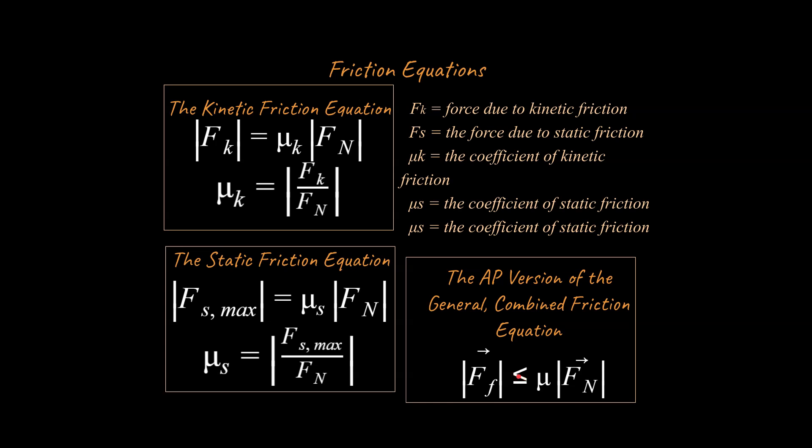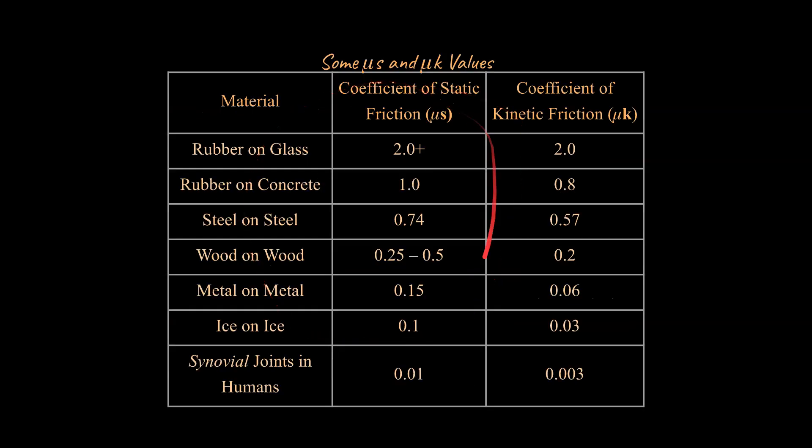All right. And we're going to be talking about what is up with this less than or equal to symbol and how to apply that. But before we do, I want to give you some quick examples of these μs and μk values and what they would look like if you're dealing with like rubber on glass. You would have higher than a 2.0. And if you have steel on steel, you would have 0.74.